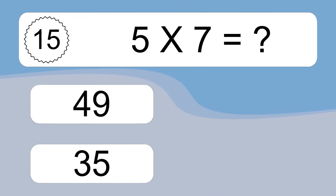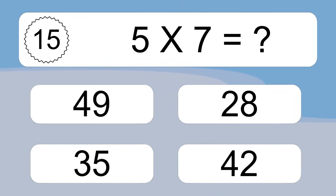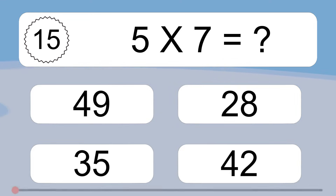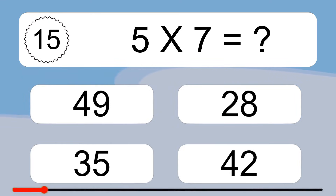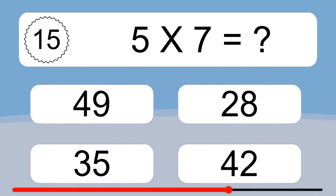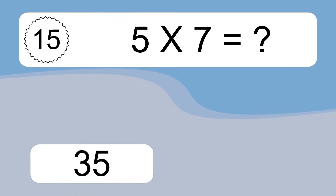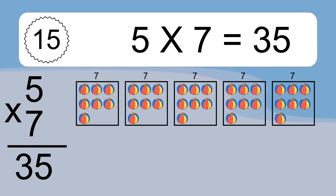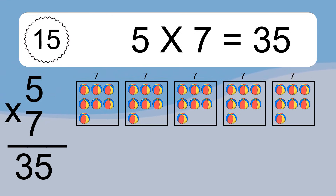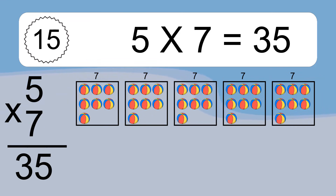5 times 7 equals what? 5 times 7 equals 35. We have 5 boxes, and each box has 7 colorful balls inside. If you count all the balls in all the boxes together, you will have 5 times 7 balls. This equals 35 balls.